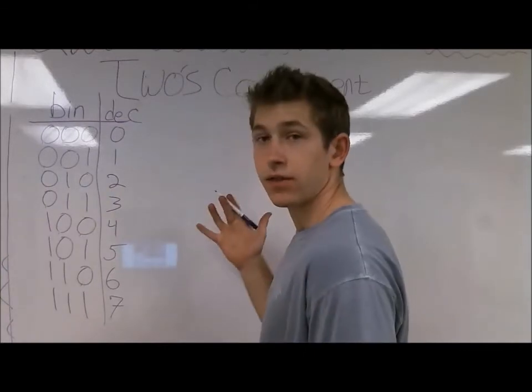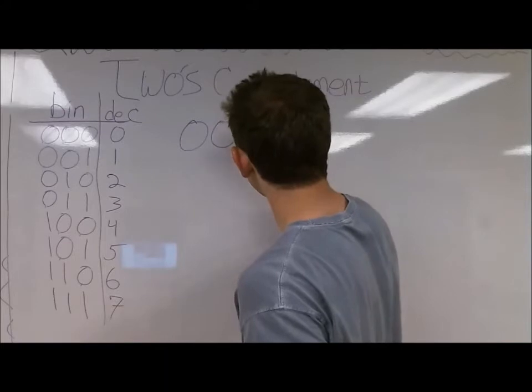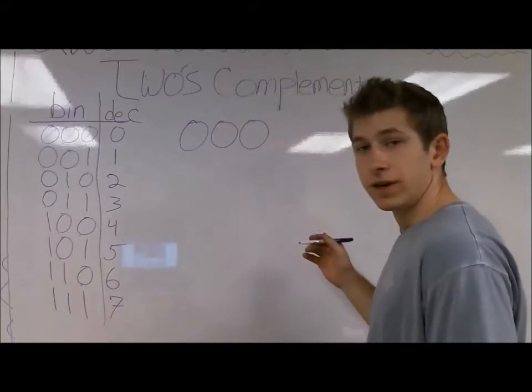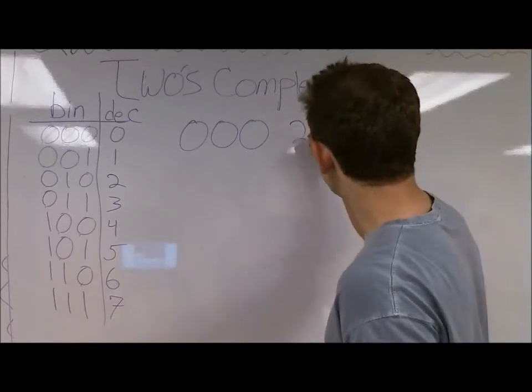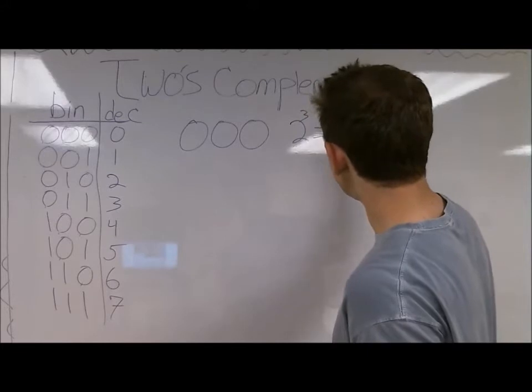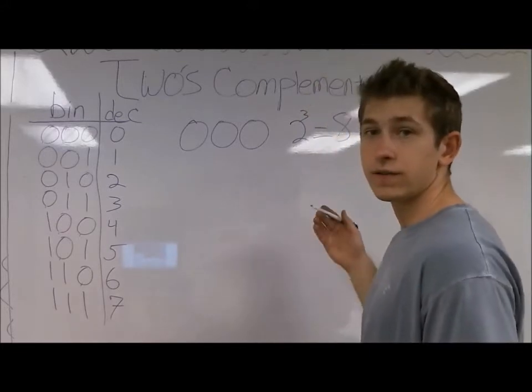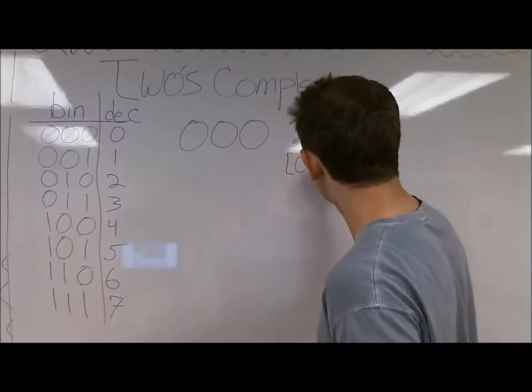Let's say we have 3 bits, that is 3 zeros. When we have 3 bits, we have 2 to the n possibilities. With n equals 3, 2 cubed is 8. So we have a range of 8 possible values, starting from 0 to 7.